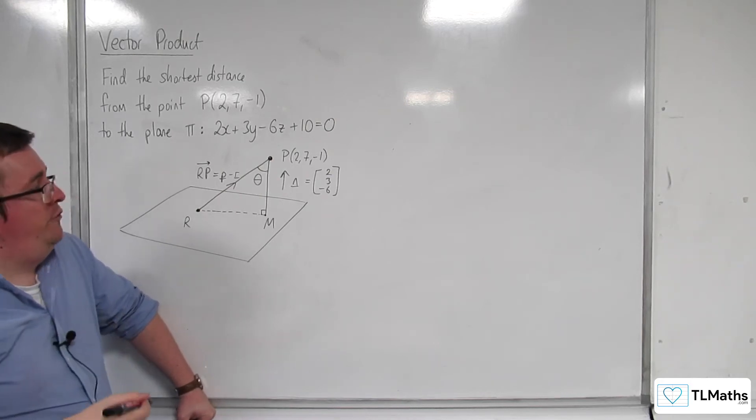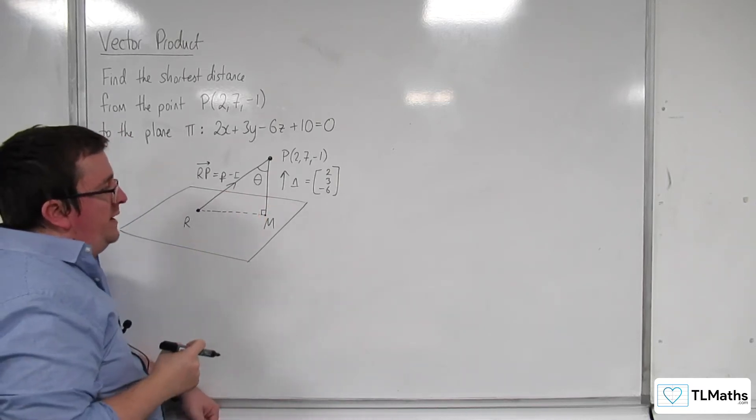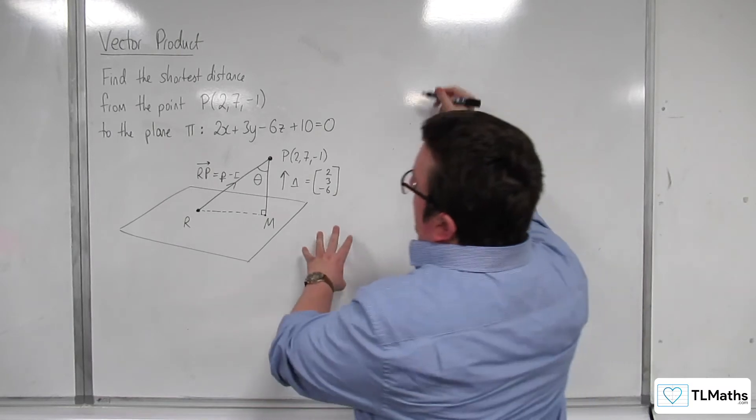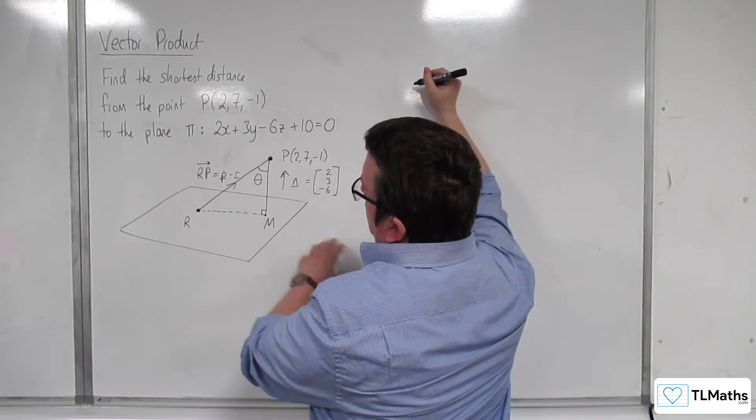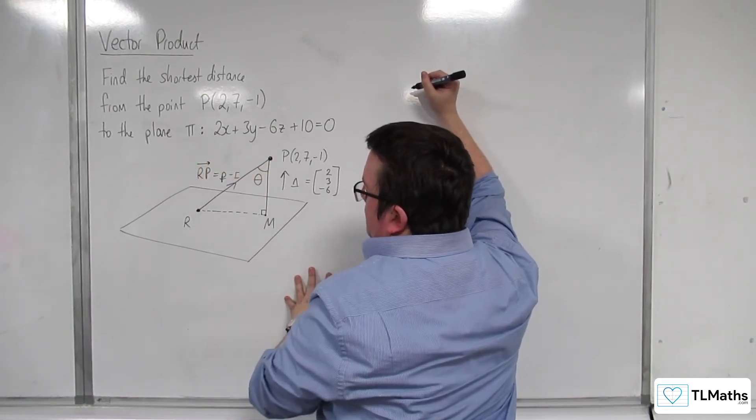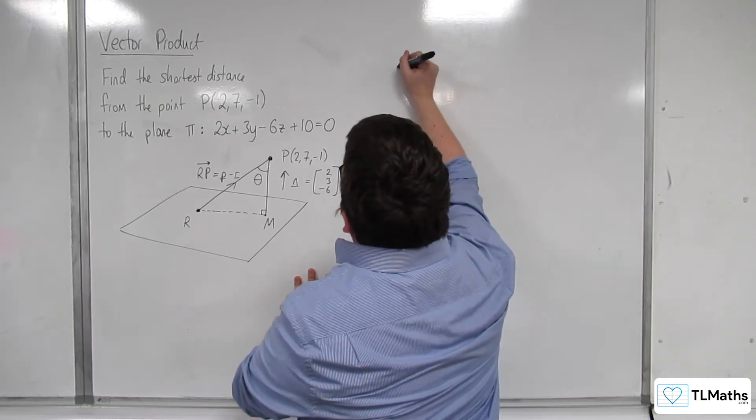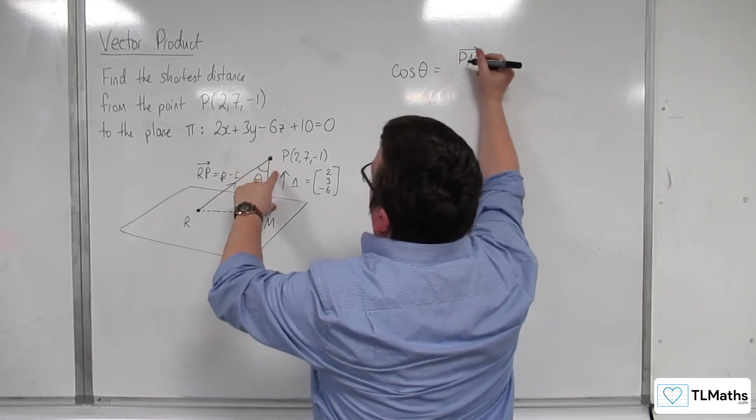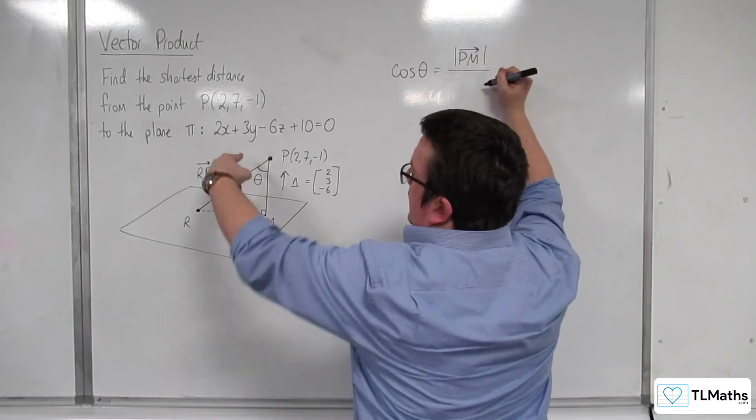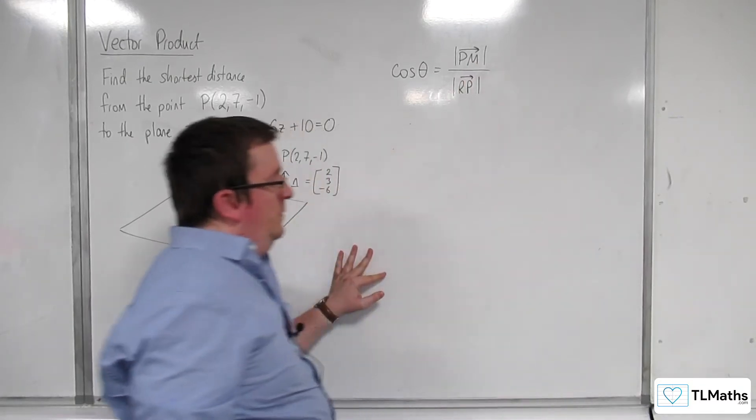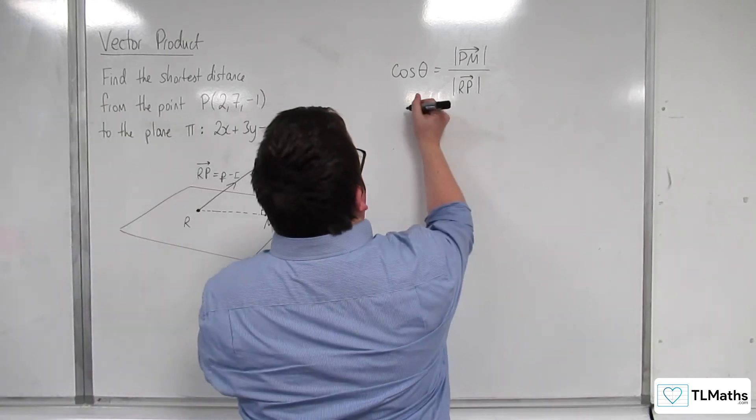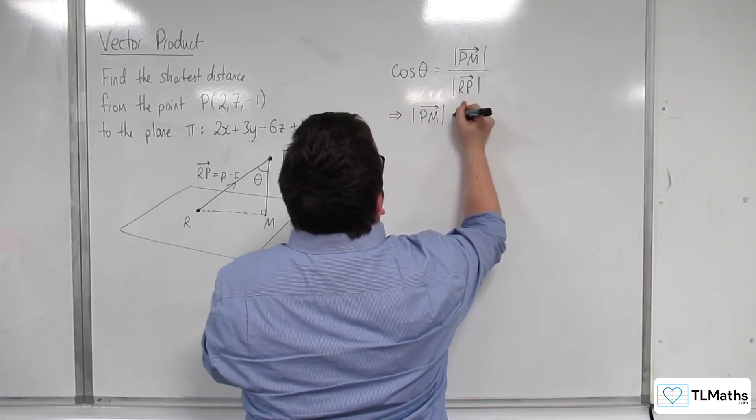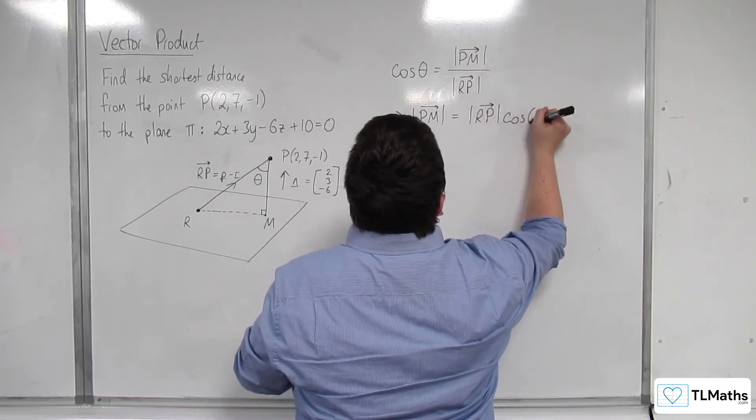And what we can say from this is that knowing, as we do, that this being a right angle triangle, we can consider SOHCAHTOA and say, well, if I was looking at SOHCAHTOA, I know PM and I know RP. So I could say that cosine of the angle is equal to the adjacent, so P to M, the length of that, divided by the length of RP. So that would mean, if I multiplied up by RP, that the length of PM must be equal to the length of RP times cosine of theta.